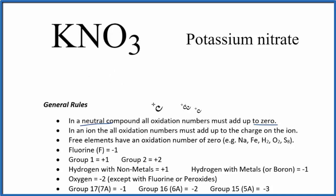Let's see if we can find each of the elements here in our rules and write the oxidation numbers. Potassium, that's in group one on the periodic table. So it has a plus one oxidation number.